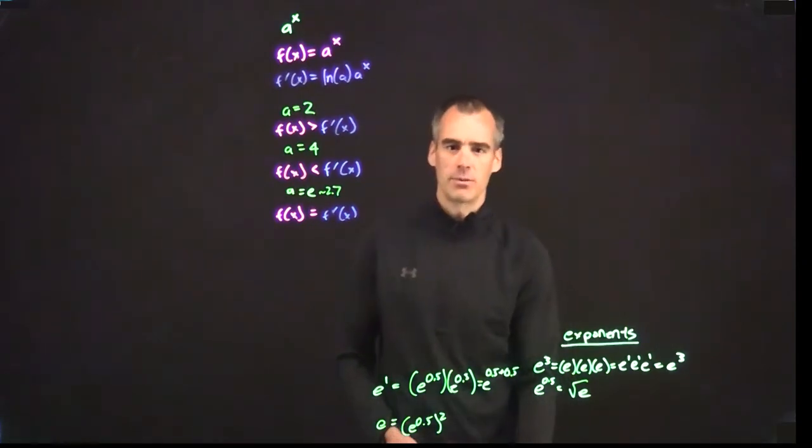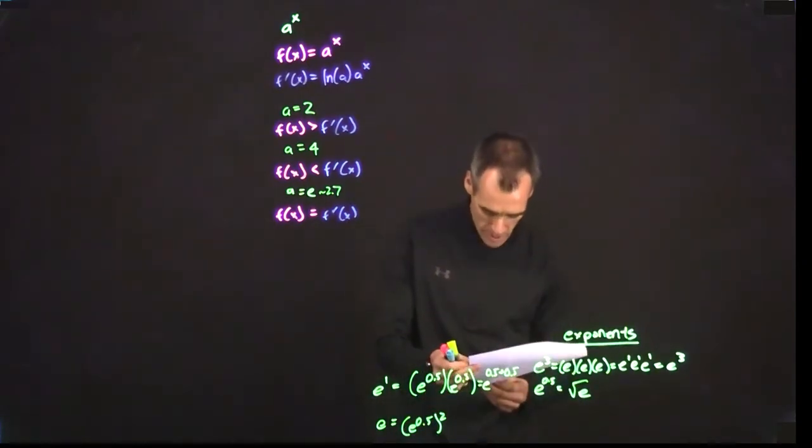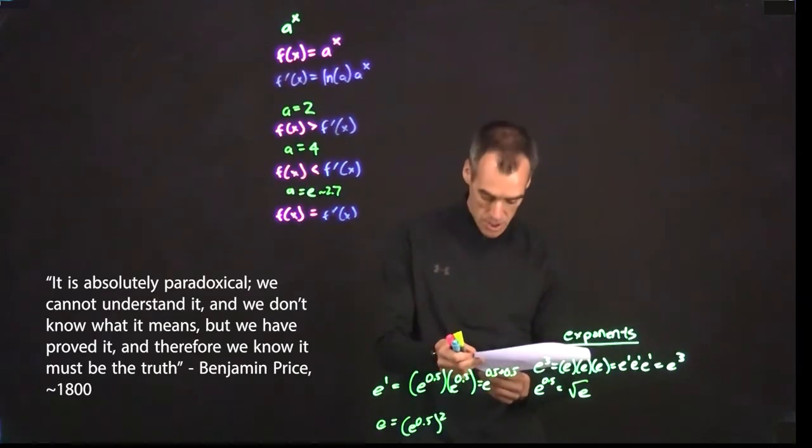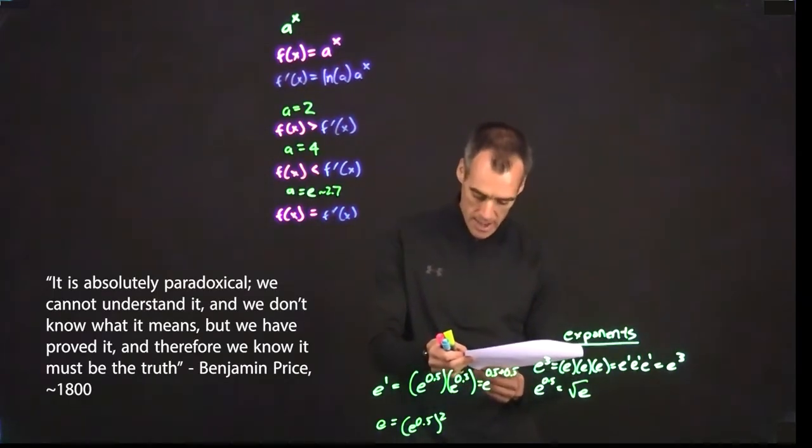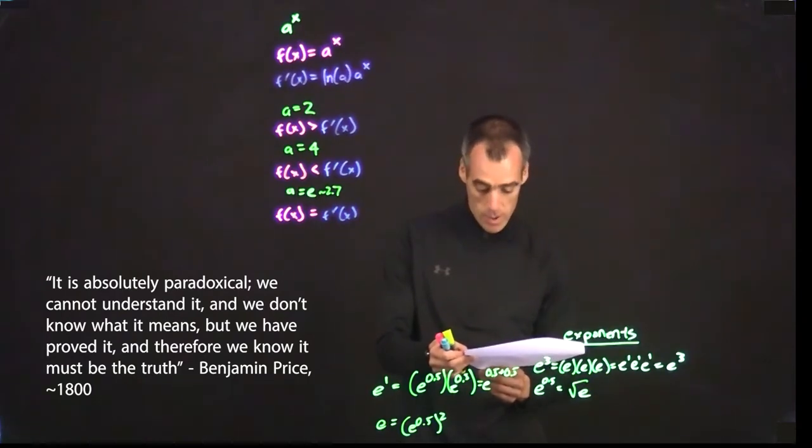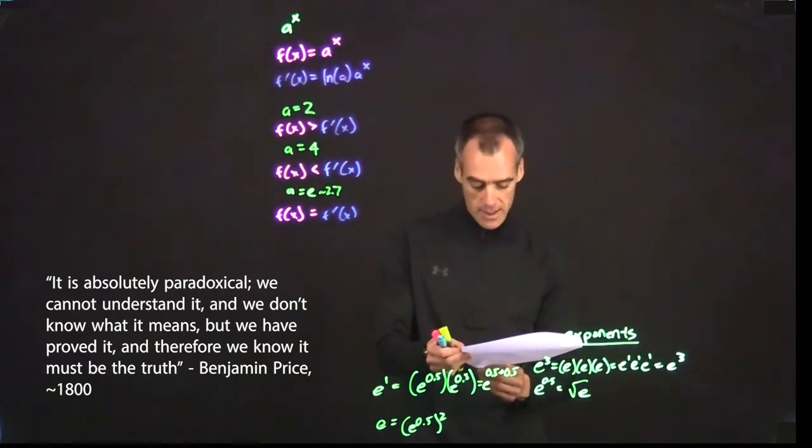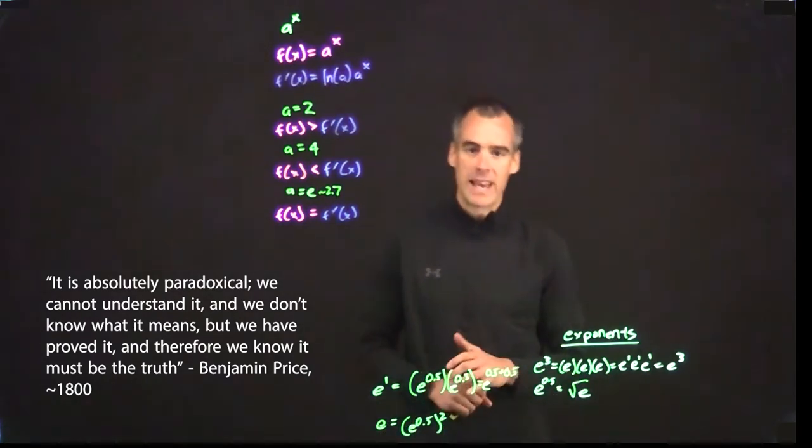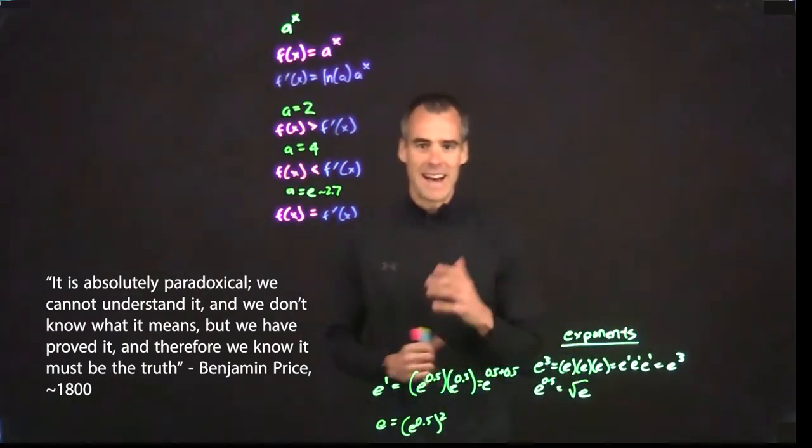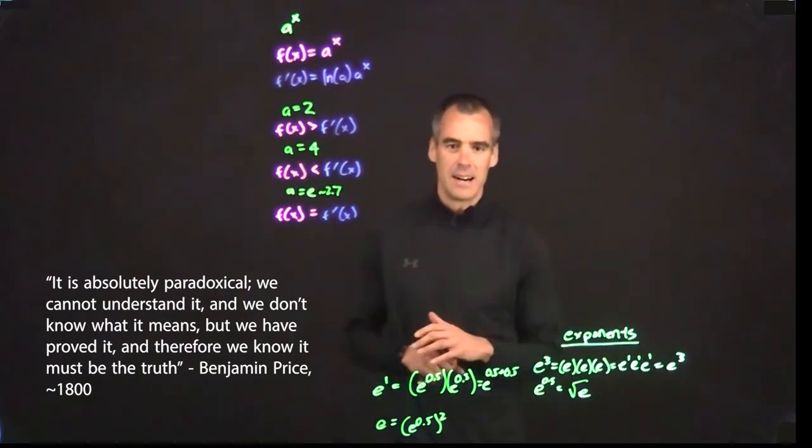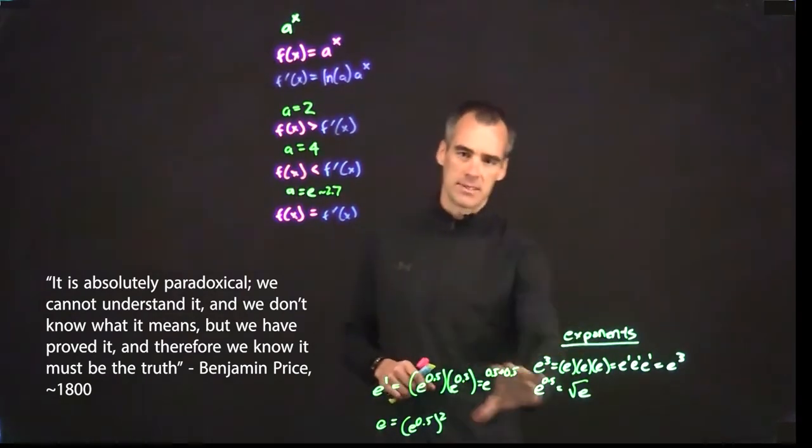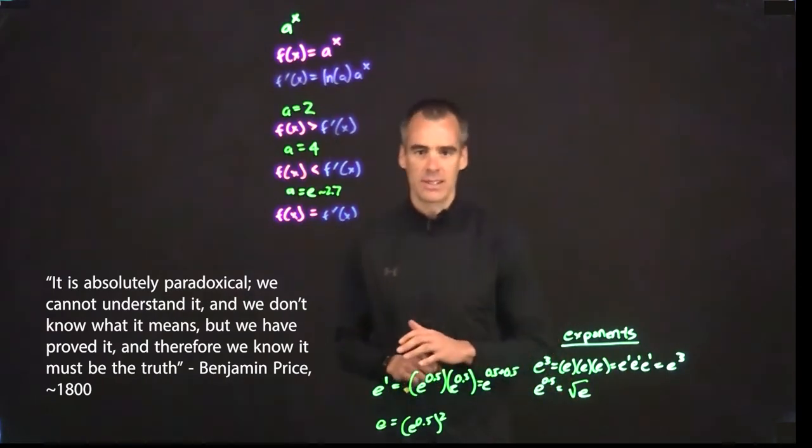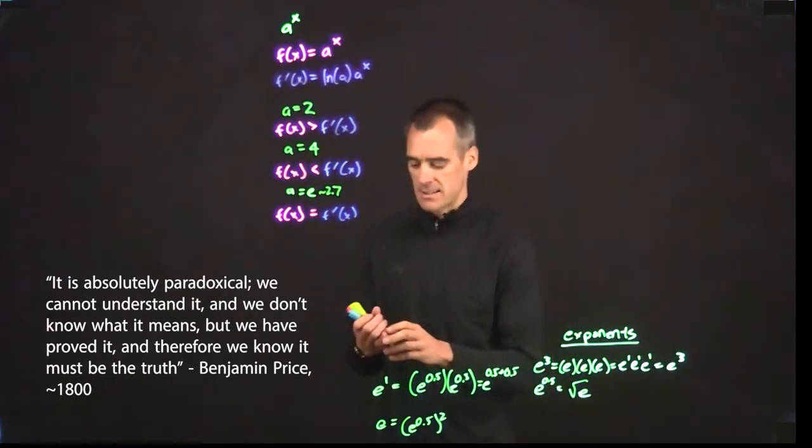I actually got a little quote. It's hard to understand, you're not quite alone because the mathematician Benjamin Price said in about 1800, it is absolutely paradoxical. We cannot understand it and we don't know what it means, but we have proved it and therefore we know it must be the truth. So how do we prove what e to the ix is?